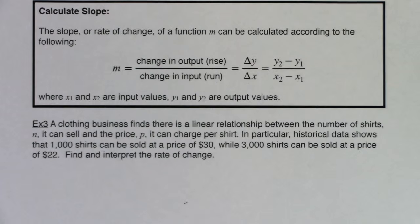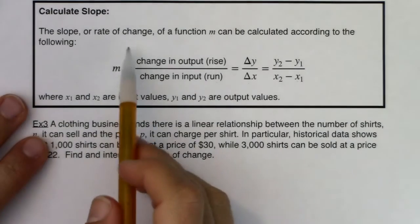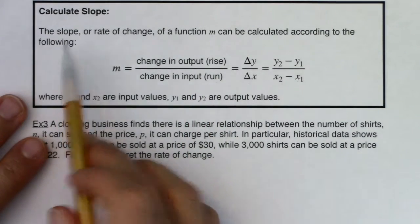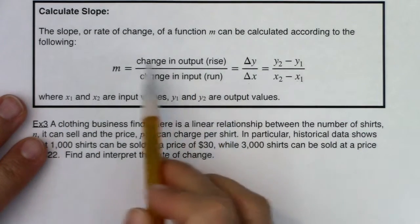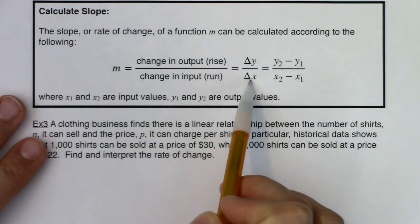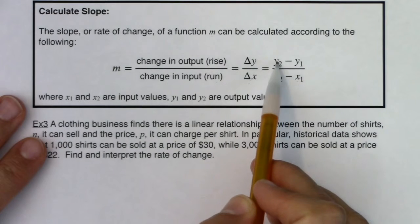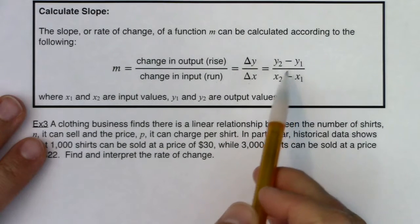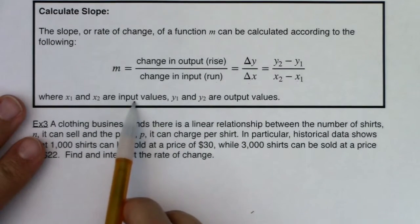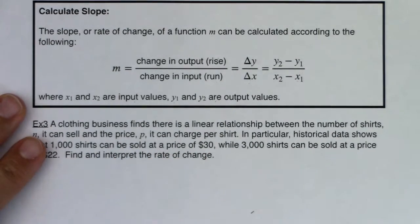Hey, Mt. 31. Let's revisit that idea of calculating slope. We've talked about this before in this class, and I'm confident you've seen this before. But the slope or rate of change of a function m can be calculated according to the following. We've got rise over run. You can say it's the change in output over the change in input. You can call it delta y over delta x. You can use the formula y₂ minus y₁ over x₂ minus x₁. x₁ and x₂ are input values. y₁ and y₂ are our output values.